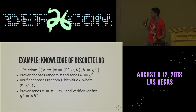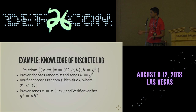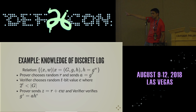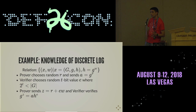The prover sends back Z equals R plus E times W. Since A is G to the R and H was originally G to the W, the verifier computes H to the E power. When you multiply all of this together, that should be the same as G to the Z value. This allows you to hide the information about that original exponent in the new exponent value.